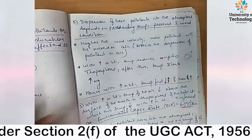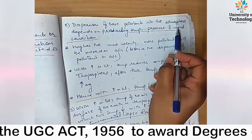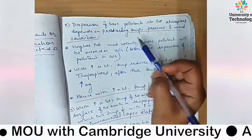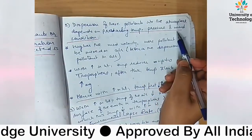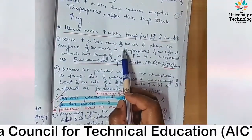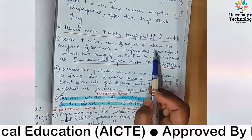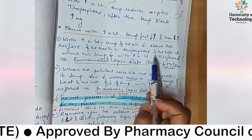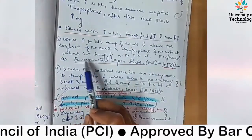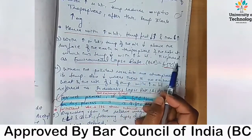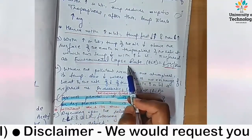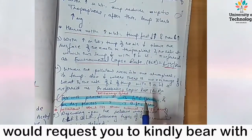Dispersion of these pollutants into the atmosphere depends on prevailing temperature, pressure, and wind conditions. With increase in height in the troposphere — up to 15 kilometers above the earth's surface — the temperature of the air decreases. The rate at which this temperature decreases with increase in height is referred to as the Environmental Lapse Rate (ELR).